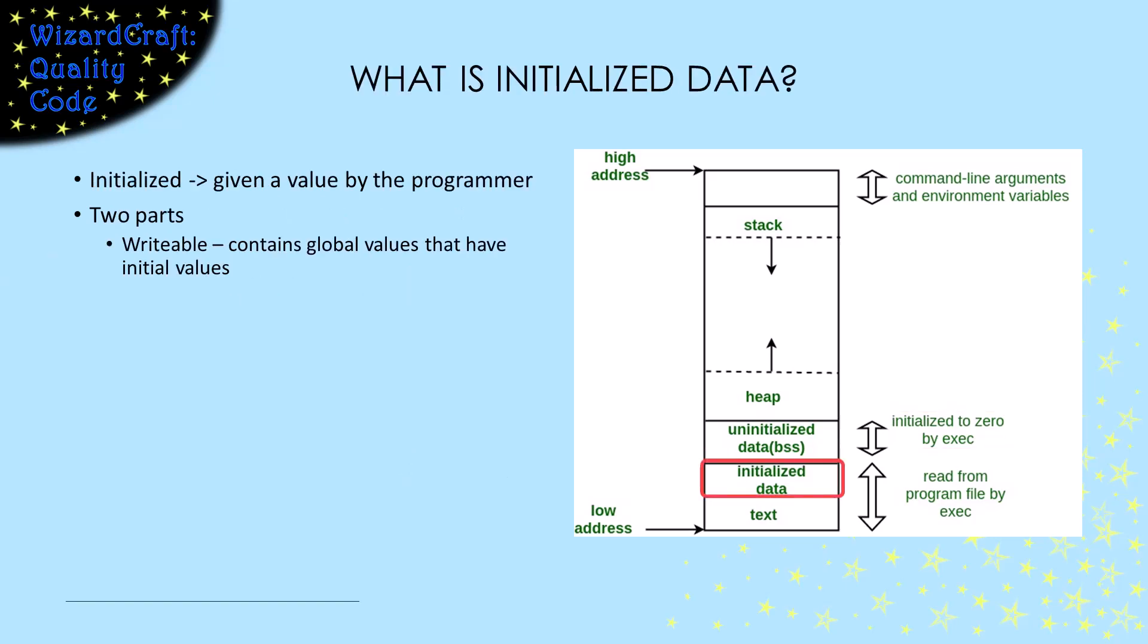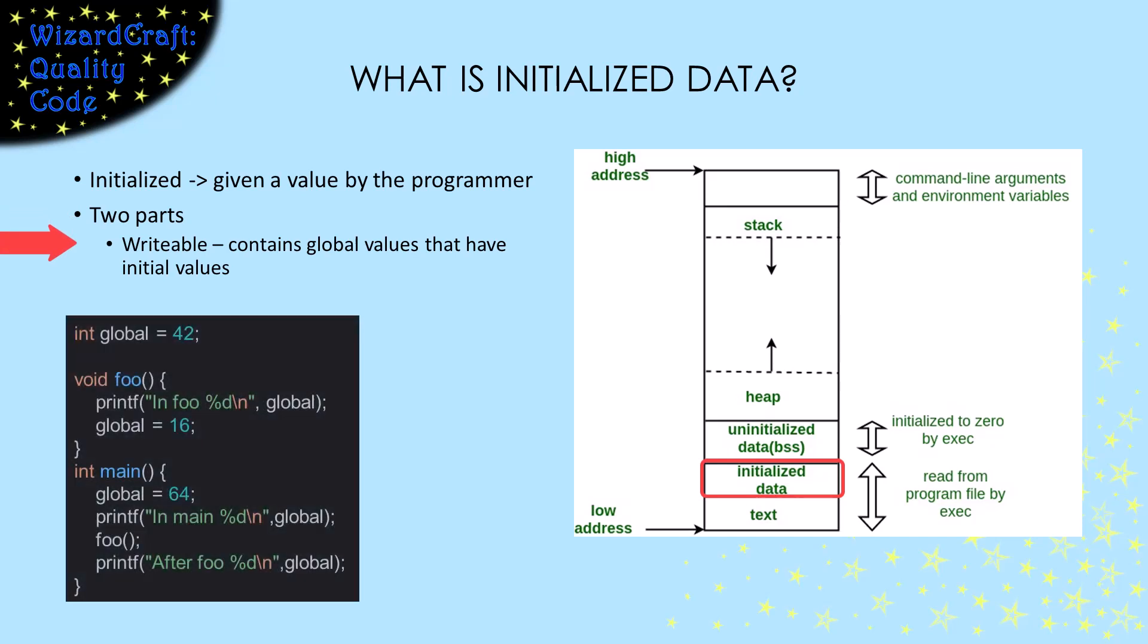The next segment is initialized data, which means that the programmer gave it a value. There are actually two parts to this segment, one that is writable and one that is read-only. The writable section contains global variables that have initialized values. So the global variable in this example would be in the initialized data segment because we gave it an initial value. They put it in this segment because they don't need the zeroing that the compiler does for the uninitialized data segment.